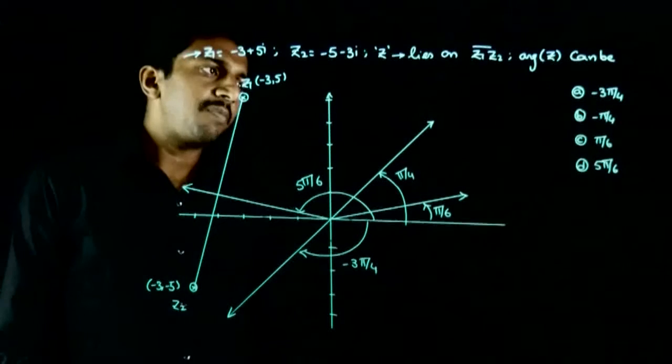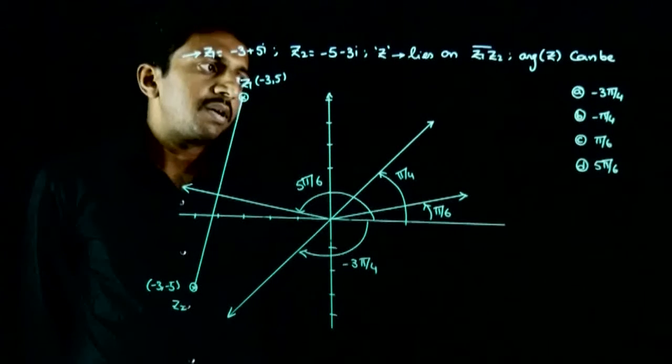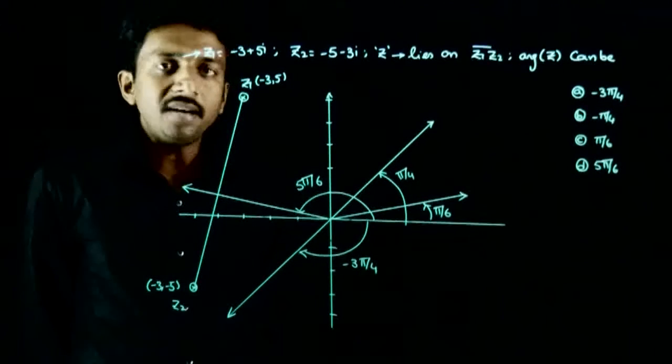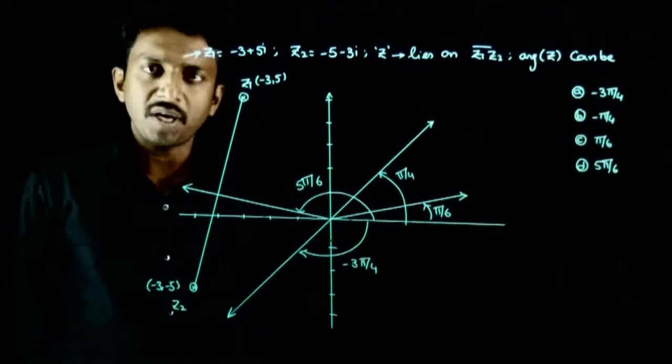You have 4 options: -3π/4, -π/4, π/6, and 5π/6.